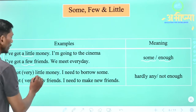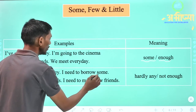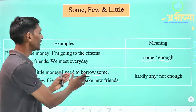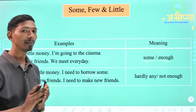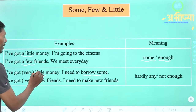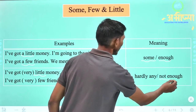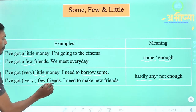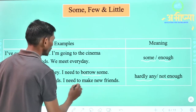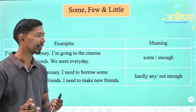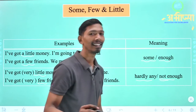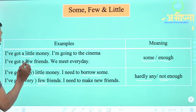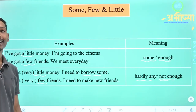'I have got little money, I need to borrow some.' Mere paas money hai, dhan hai, mujhe udhaar lene ki zaroorat hai — yaani negative sense, negative idea mein hai. Yahan pe kami hai, isliye yahan pe humne 'little' ka use kiya hai. Yahan pe 'not enough' ya 'hardly' hai. Next: 'I have got few friends, I need to make new friends.' Yaani mujhe kuch new friends banane ki zaroorat hai. Yahan pe bhi 'not enough' — paryapt nahi hai. Is tarah se humne dekha ki 'a little' ya 'a few' ka use hum positive sense mein karte hain, jabki 'little' ya 'few' ka use hum negative sense mein karte hain.